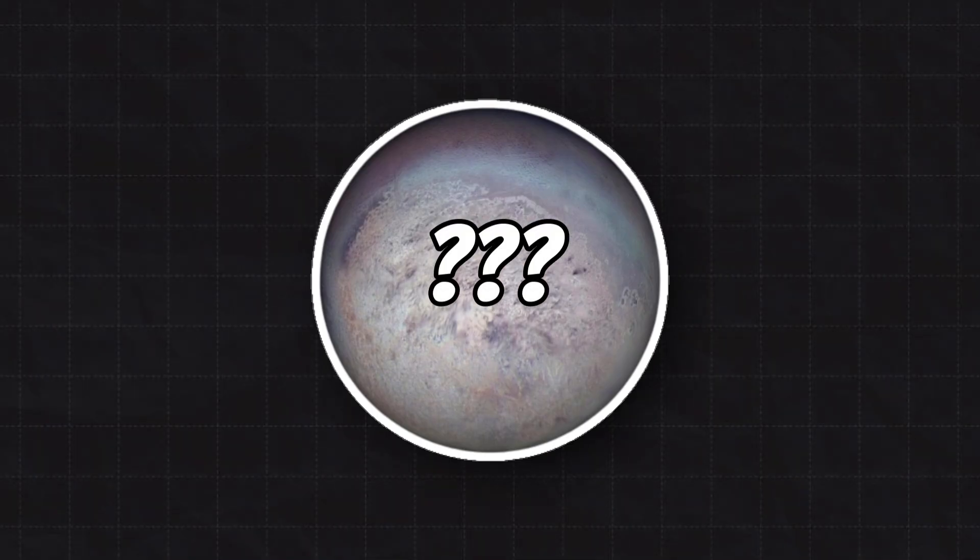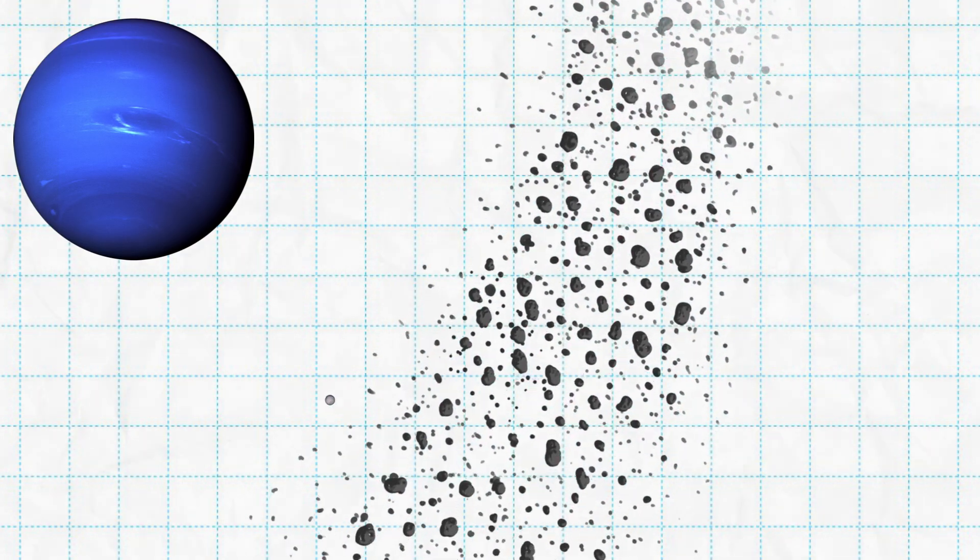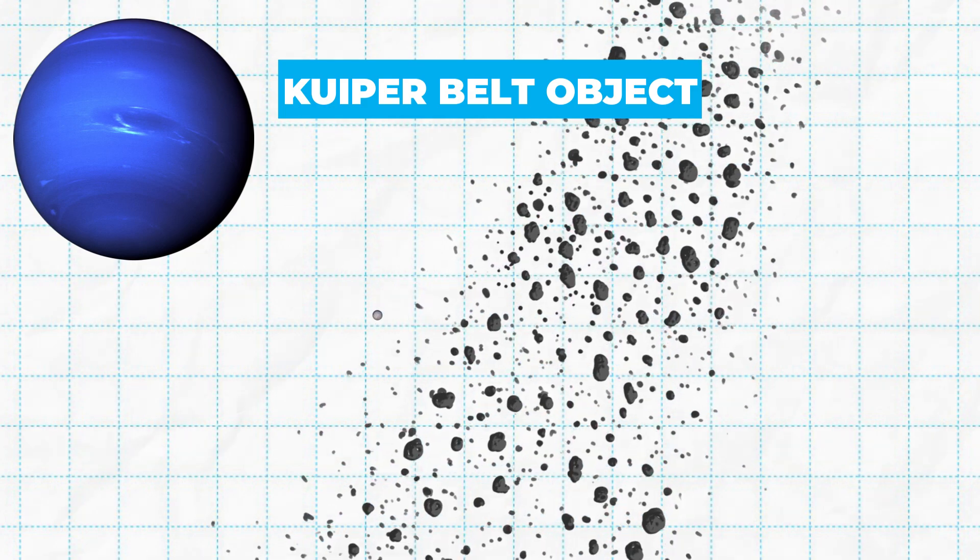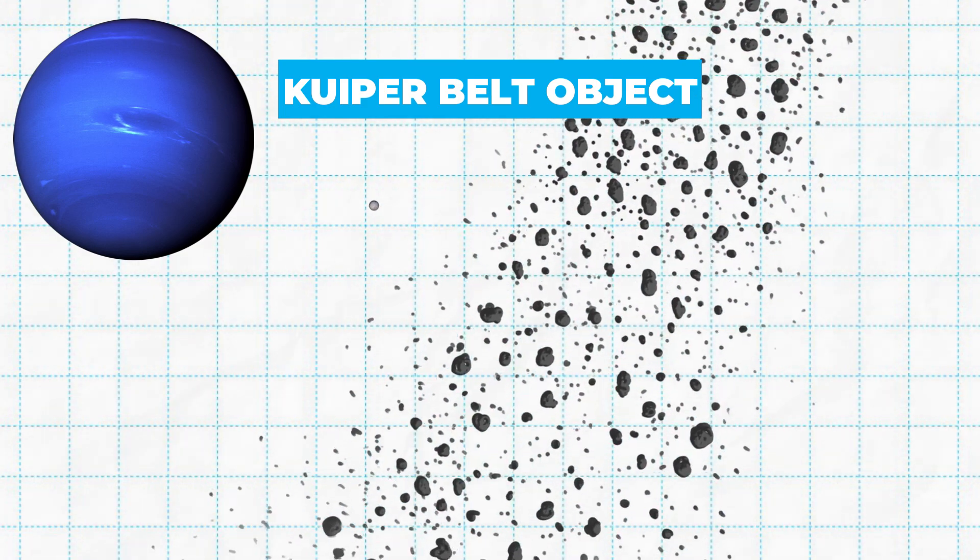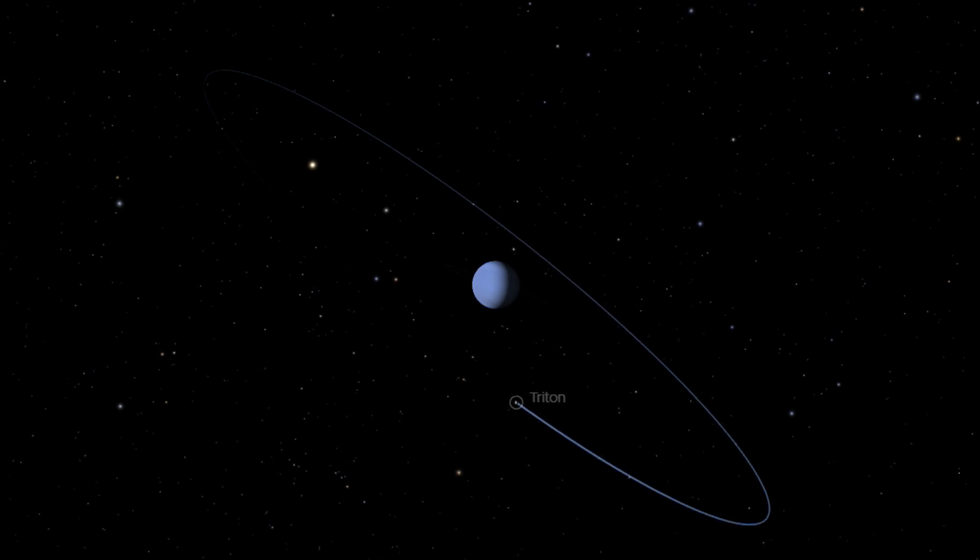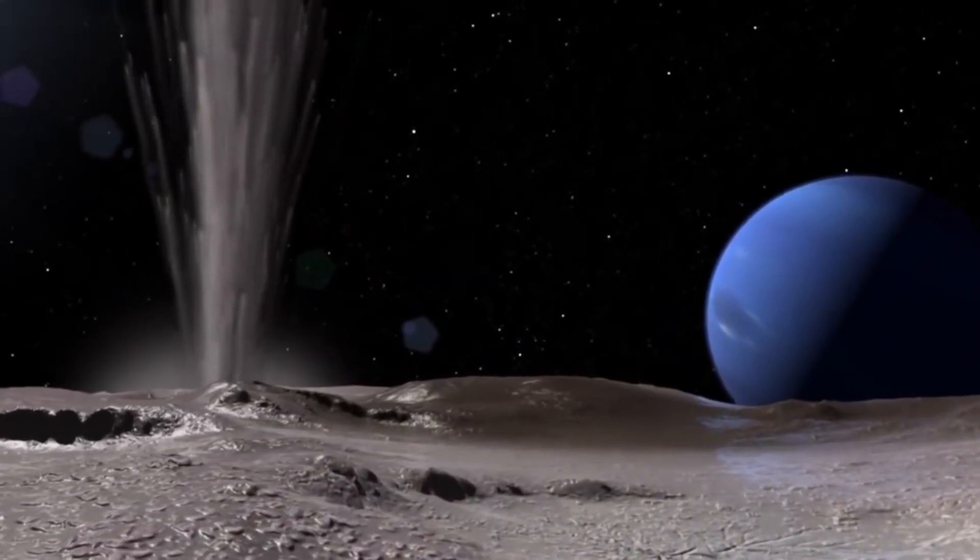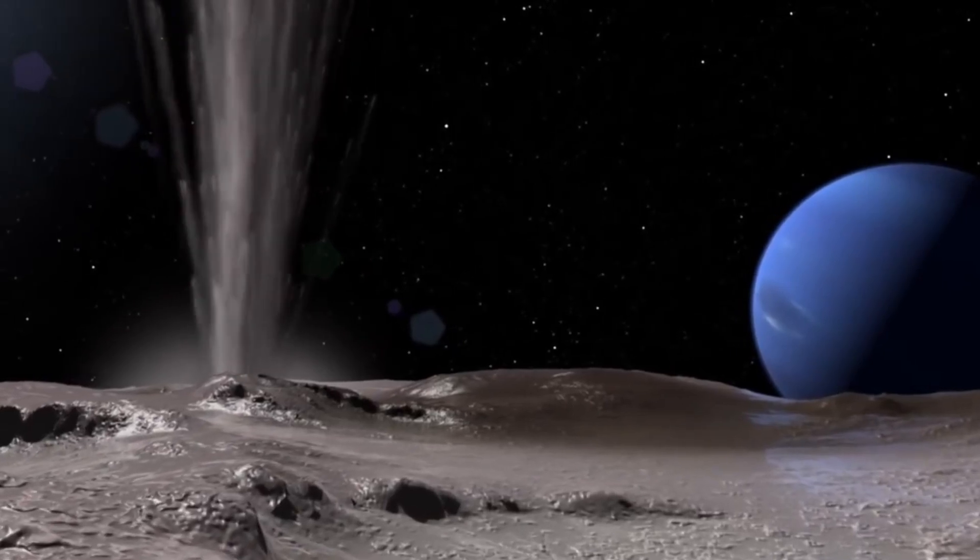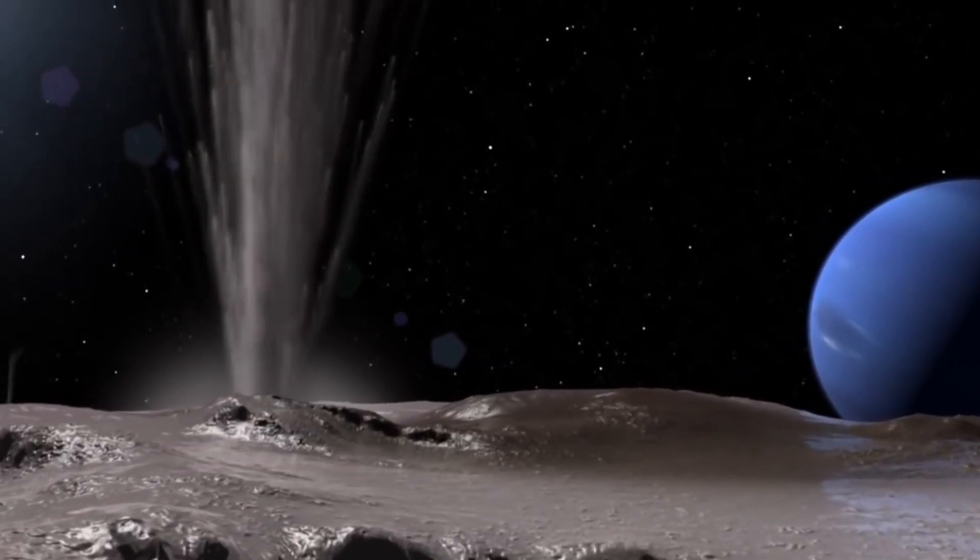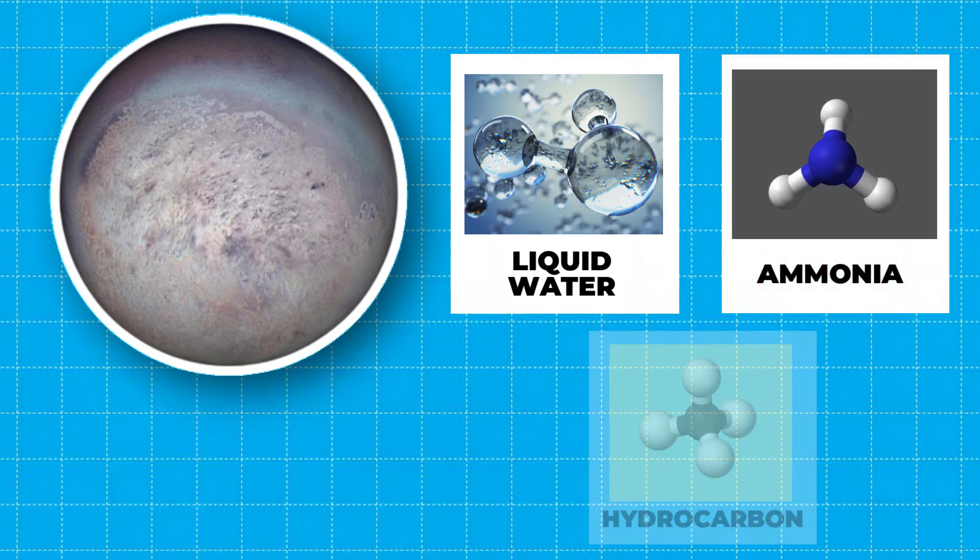What do you think was the reason for this unique behavior of Triton? One leading theory was that Triton could possibly be a captured Kuiper Belt object, naturally pulled by Neptune's gravitational force, which explains why it orbits in a different direction. Triton's surface is covered in ice and the occasional cryovolcano, which erupts gases and volatile materials such as liquid water, ammonia and hydrocarbons.